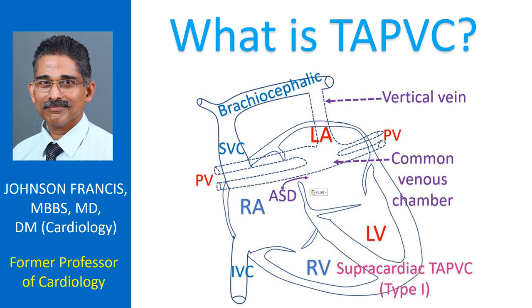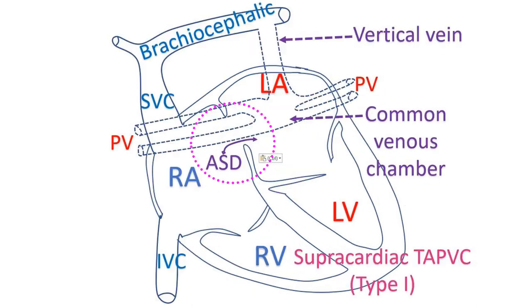If only some of the four pulmonary veins join the right side of the heart, then it is called PAPVC or Partial Anomalous Pulmonary Venous Connection.